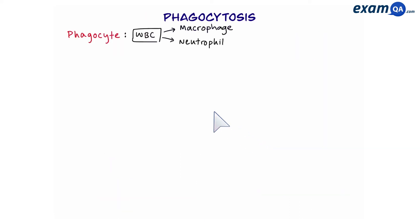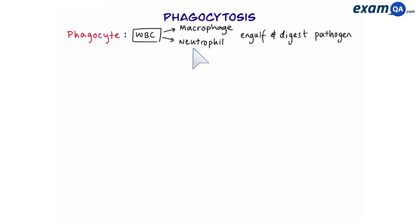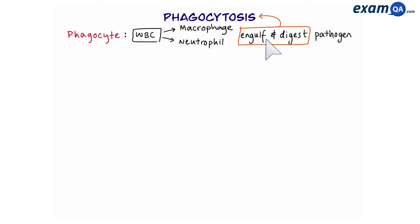A quick recap: a phagocyte is a white blood cell such as a macrophage or a neutrophil. They engulf and digest pathogens, and this process is called phagocytosis. Here's how it works.